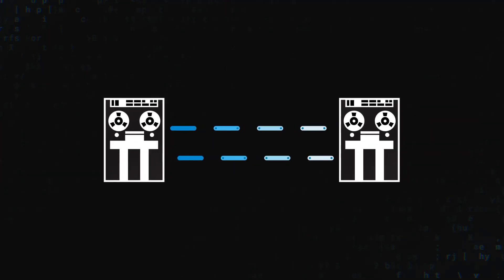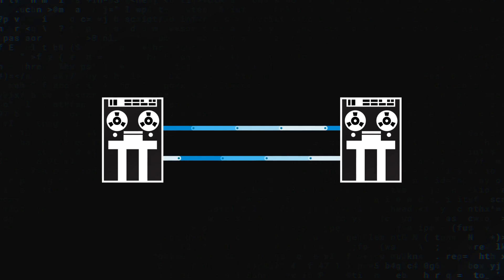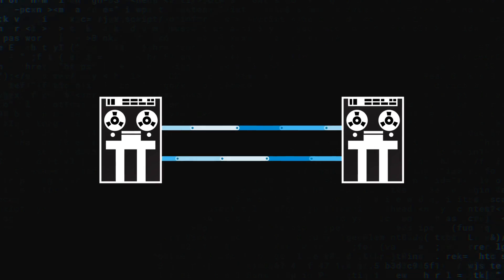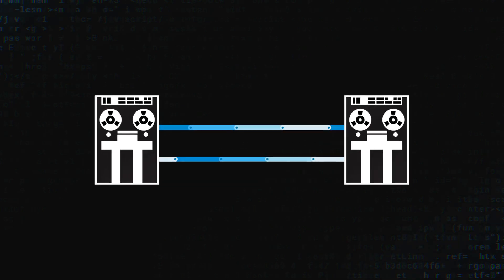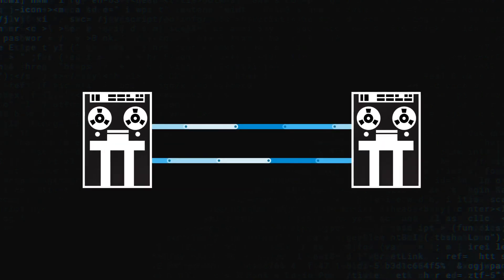If we think about network design and computer science in general as being based on incentives, and we go back to the 1960s when networks were first being born, the incentive was really to get machines talking to each other. So security was not really top of mind.